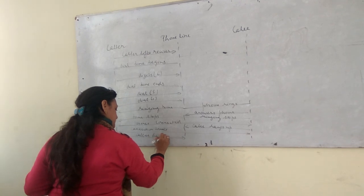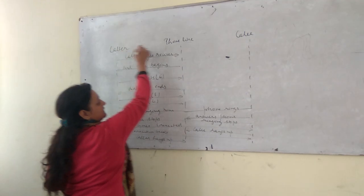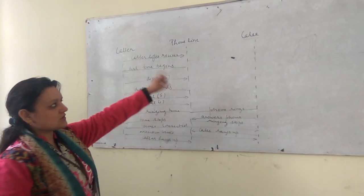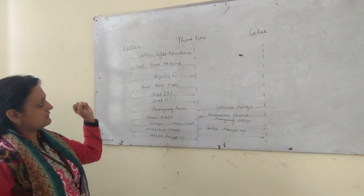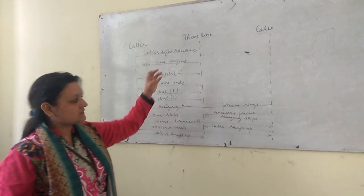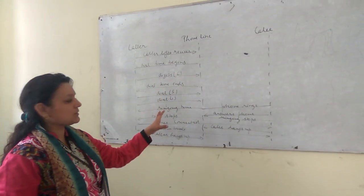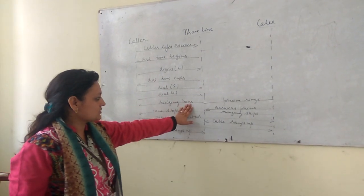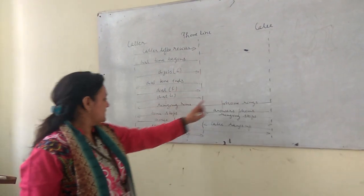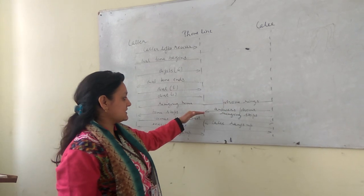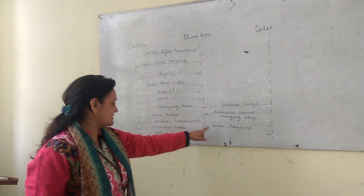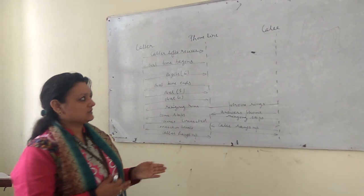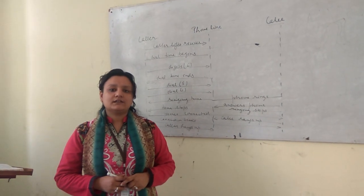And the last event is the caller hands up. This whole diagram is of dynamic modeling, in which we are showing that if we dial any number to a friend — the callee — we first lift the receiver, then dial the numbers. For a landline we have 6 digits; for mobile we have 10 digits. Then the ringing tone is there, the phone rings on the callee end, tone stops, you answer the phone, ringing stops, and the phone gets connected. Callee hangs up, connection is broken, and the caller also puts the receiver down. This is about dynamic modeling. I hope the concept of ringing a phone from a caller to a callee is clear to you. Thank you.